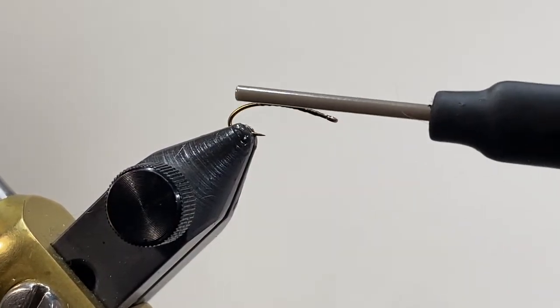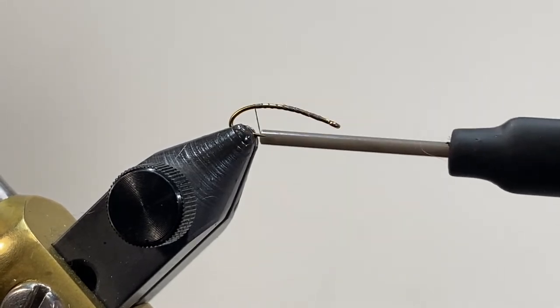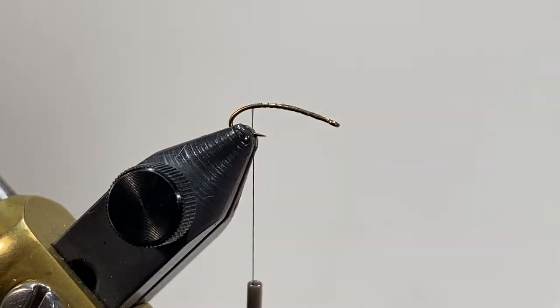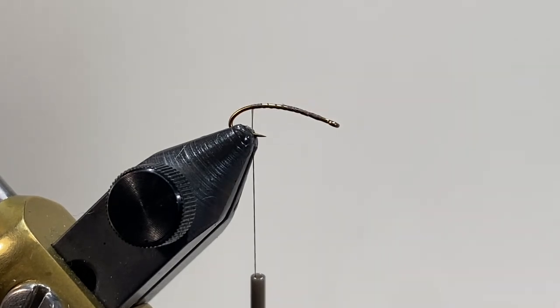We want to bring our thread down the shank so that it's even with the barb. This particular hook has a natural curve all the way down and it's difficult to see where that begins.